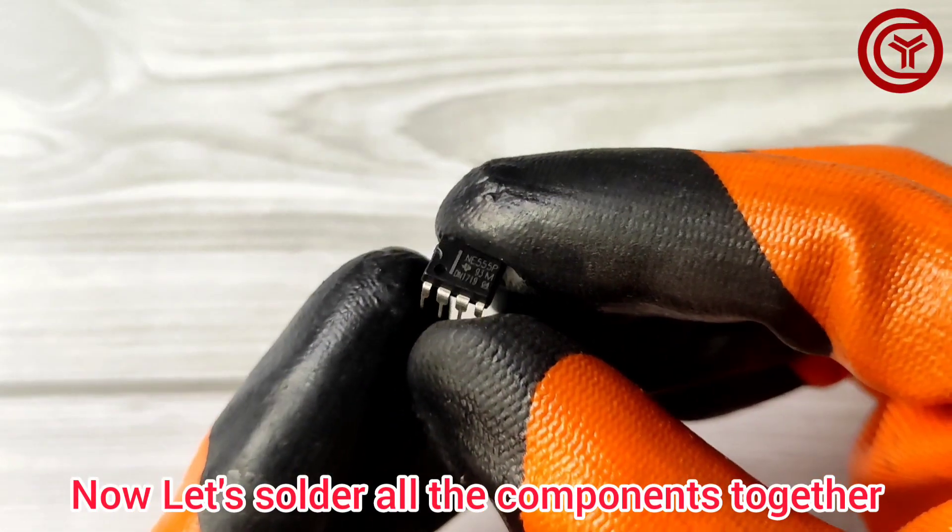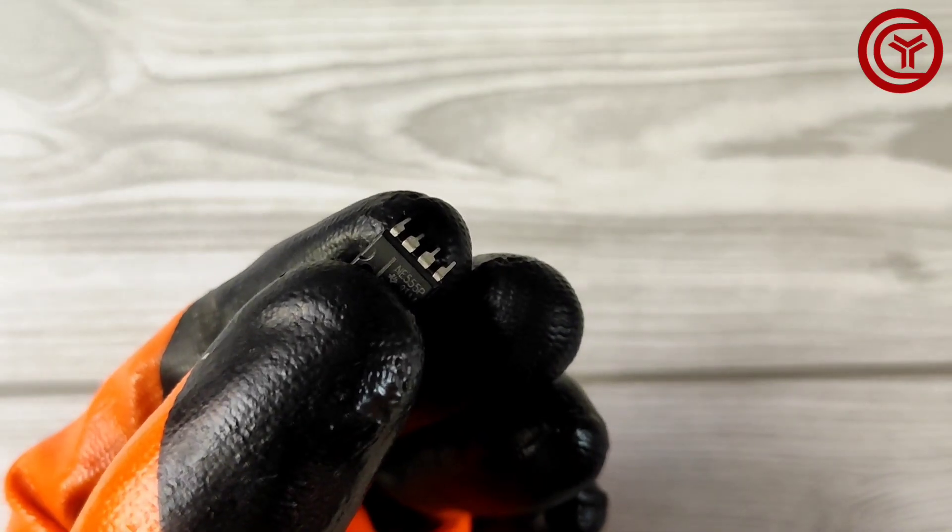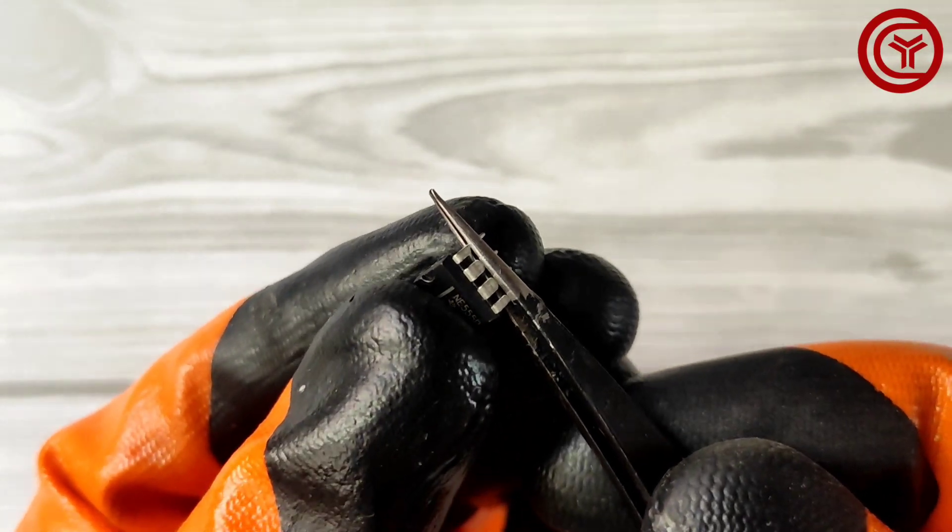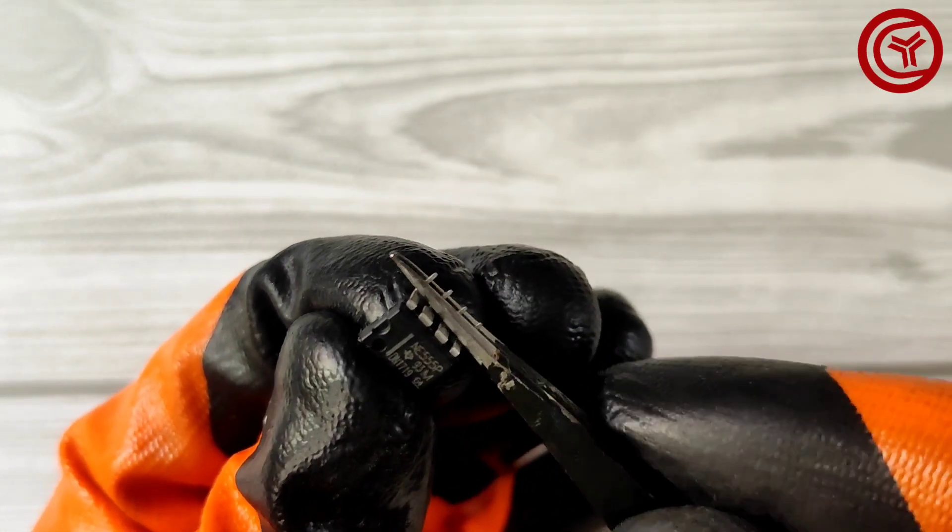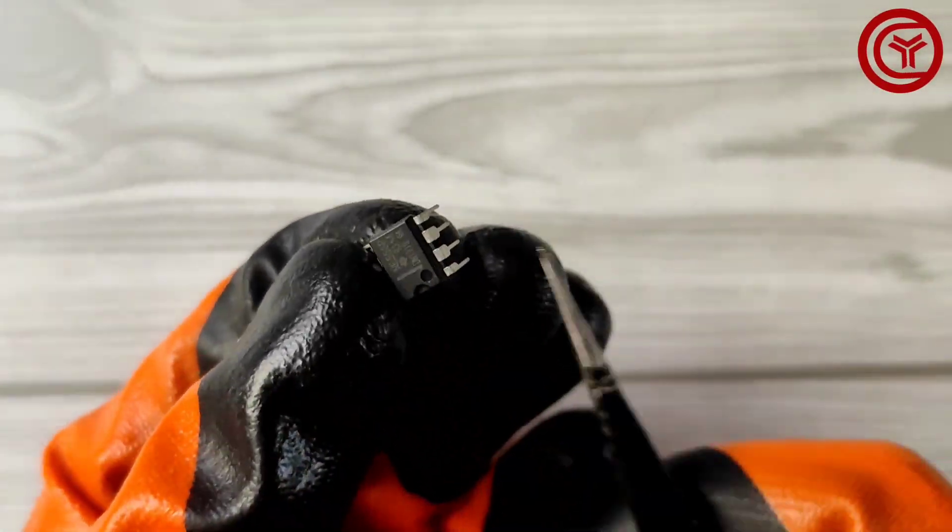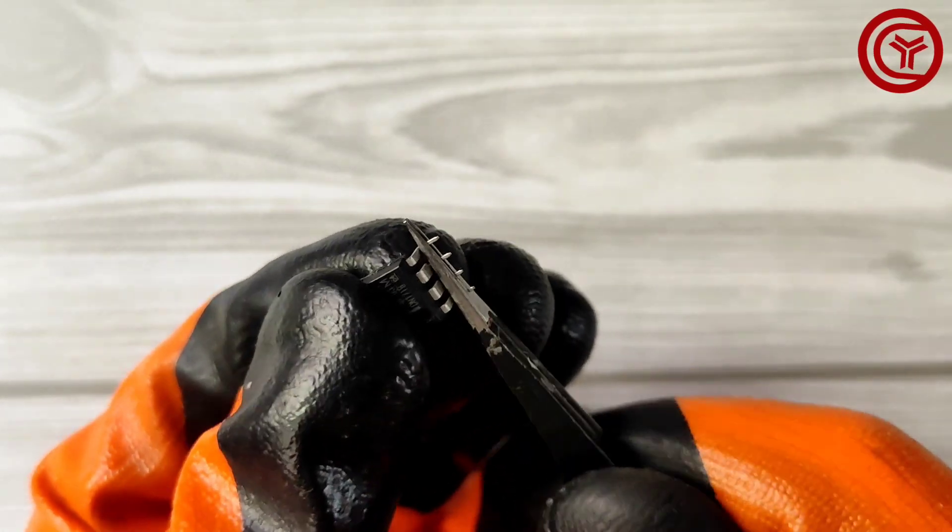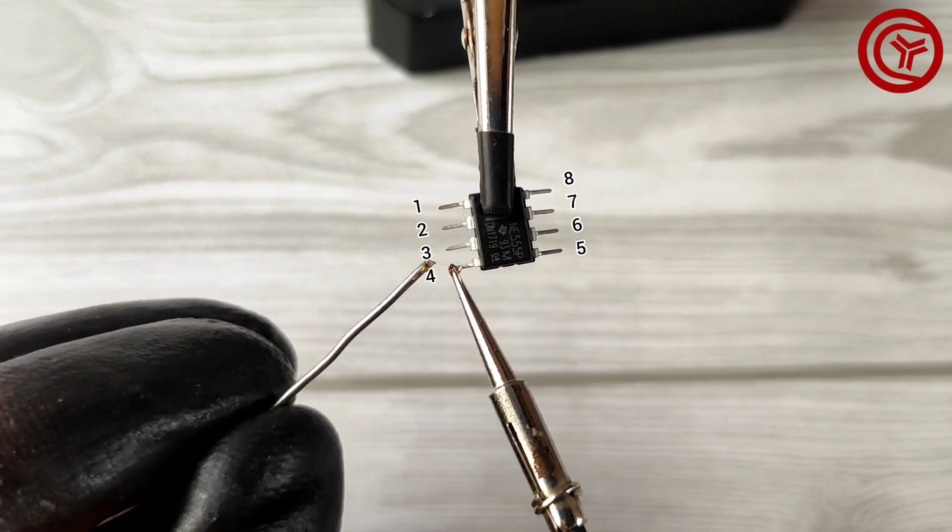Now let's solder all the components together. We need to bend the legs of IC like this. Apply some solder on IC pins.